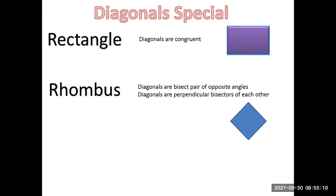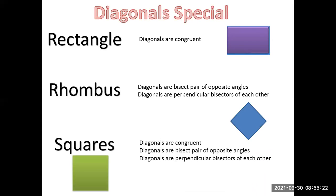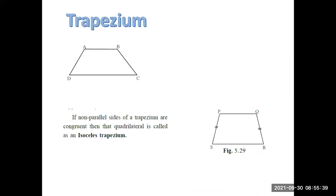For a rectangle, the diagonals are just congruent. For a rhombus, the diagonals bisect the opposite angles and are perpendicular bisectors of each other. For a square, all three properties are true: the diagonals are equal, the diagonals are perpendicular bisectors of each other, and the diagonals bisect the pair of opposite angles.